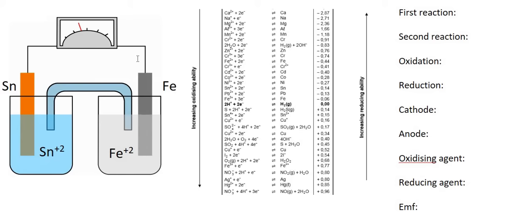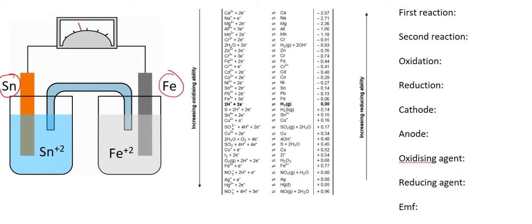Hey guys, welcome to this lesson. In this lesson, we're going to practice what we learned in the last lesson. So here we have a galvanic cell with tin, which is Sn, and iron, which is Fe.